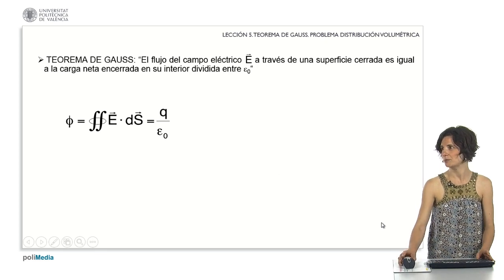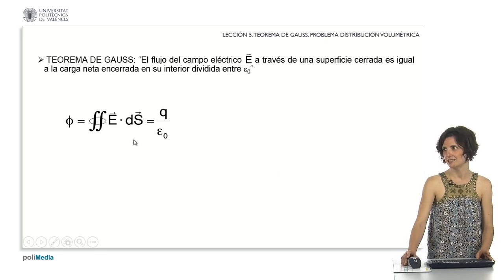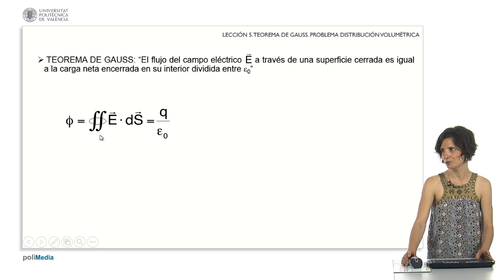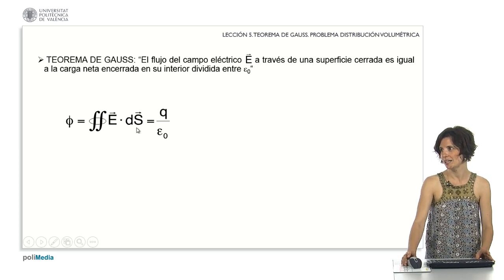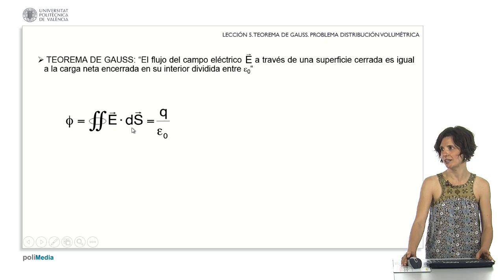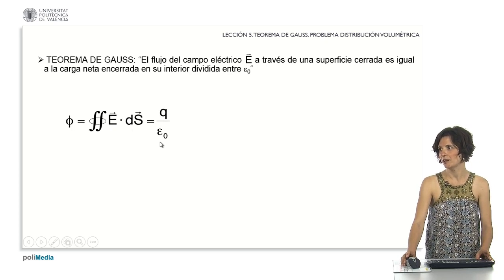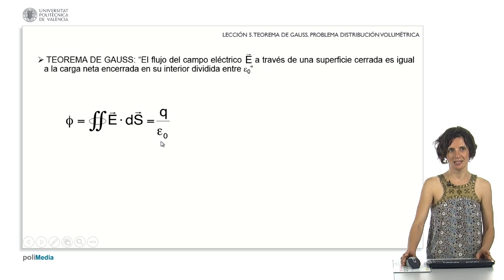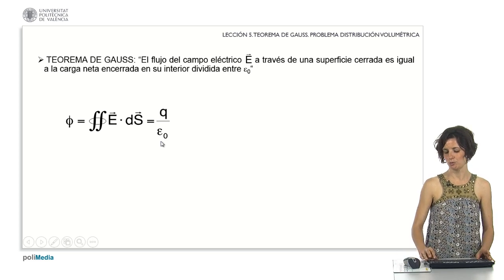The mathematical expression is as shown on the screen. The flux corresponds to the surface integral of the scalar product between the electric field and the differential vector dS. This flux is equal to the enclosed charge divided by the electric permittivity in the vacuum, epsilon sub-zero.